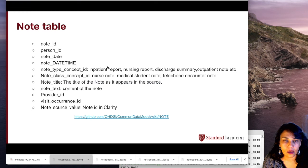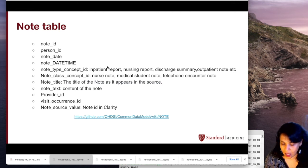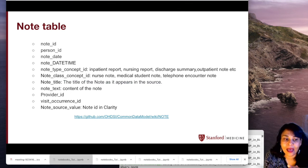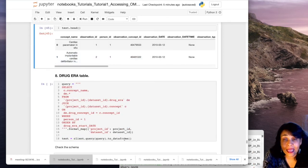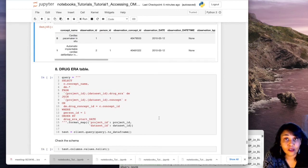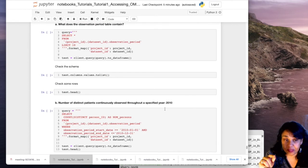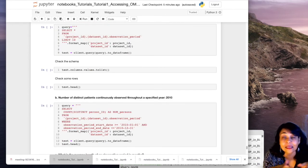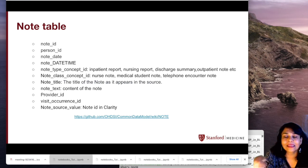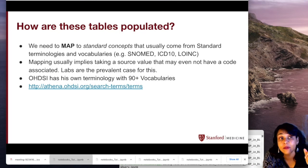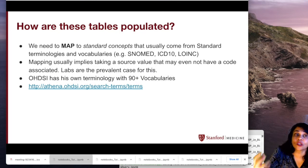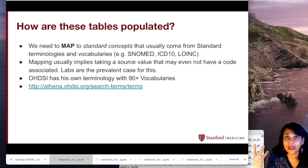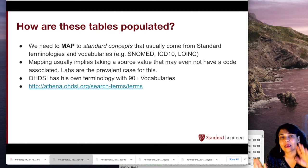Where would I find pathology reports? The answer is the note table. What's really exciting about the star OMOP dataset is that we provide pre-IRB all the clinical notes a patient may have. The SynPUF dataset is synthetic and does not have the note table populated, but the Stanford OMOP star dataset does have the note table populated with clinical text. It also has the note NLP table populated, where NLP algorithms have been used to pull out concepts from clinical notes. We'll cover the note table and note NLP table in detail in tutorial four.